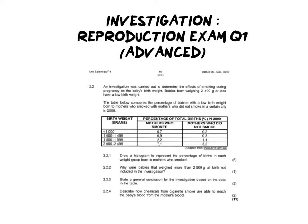Let's get into the question. It says an investigation was carried out to determine the effects of smoking during pregnancy on the baby's birth weight. That is the aim of the experiment, and I suggest that in every exam you highlight it so that you can go back to it and reference it. It also tells us that babies born weighing 2,499 grams or less have a low birth weight — they're telling you that for a reason and I'll come back to it.